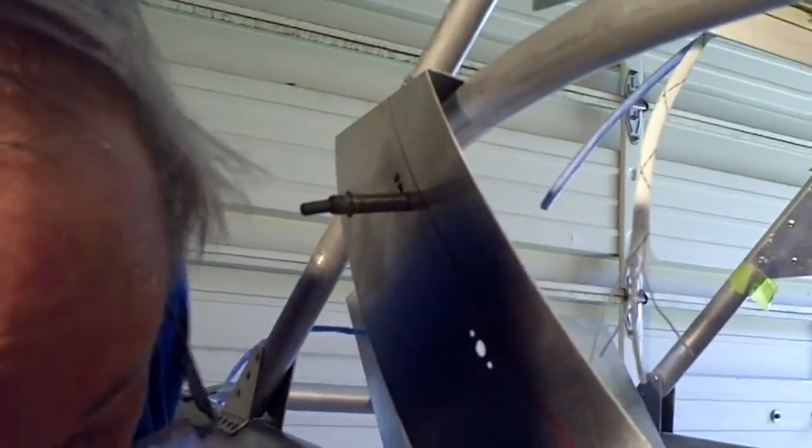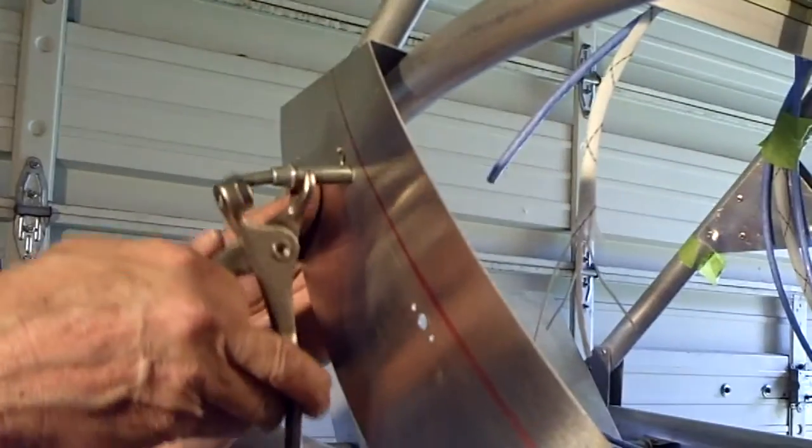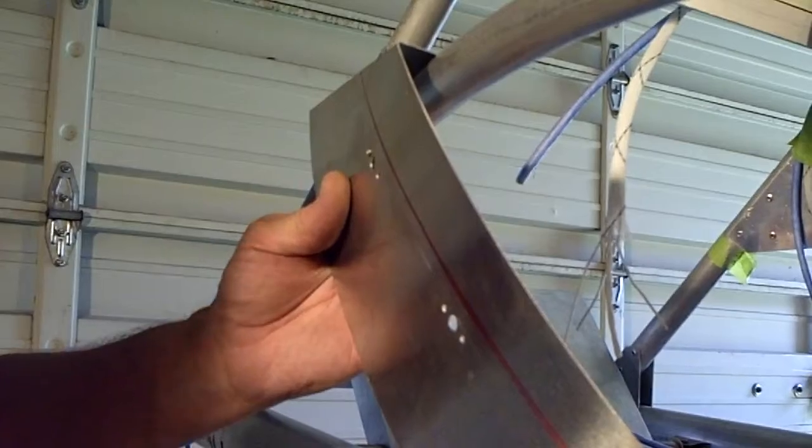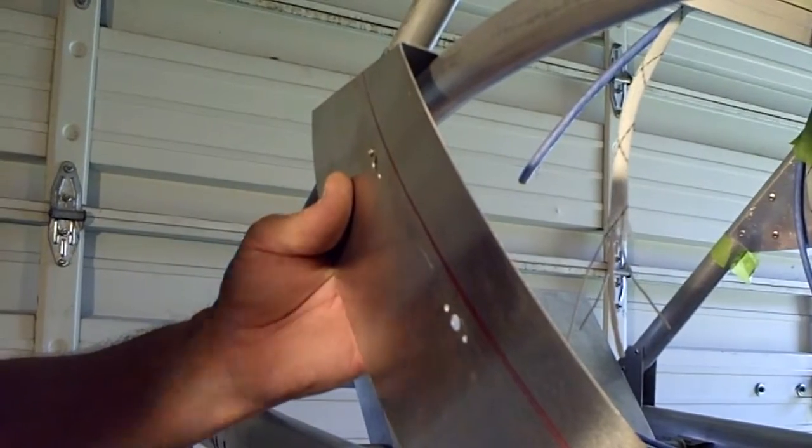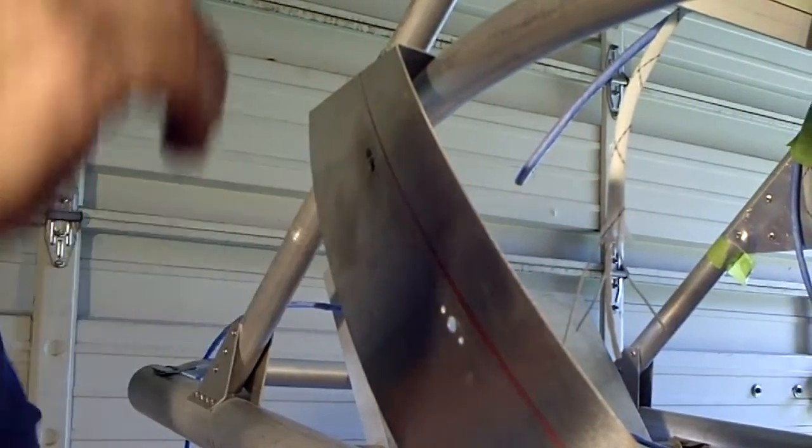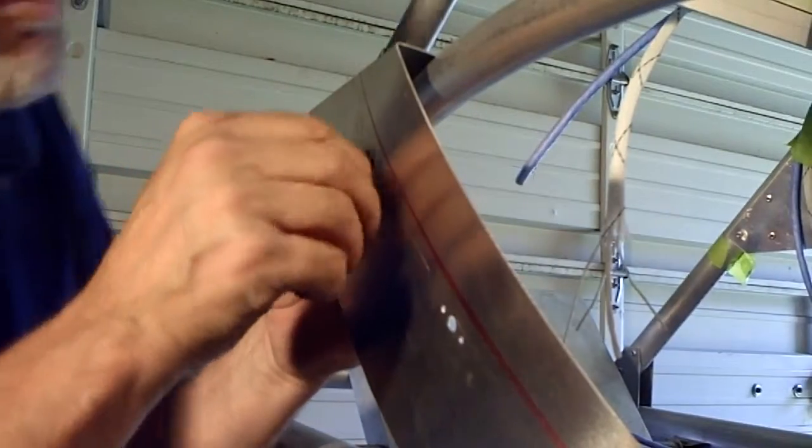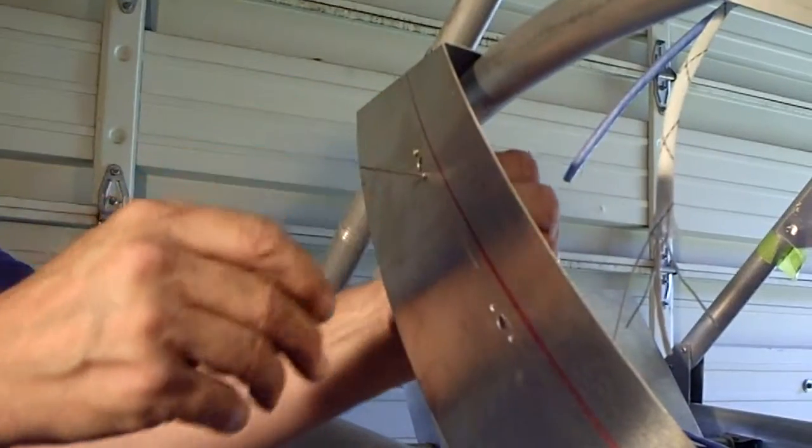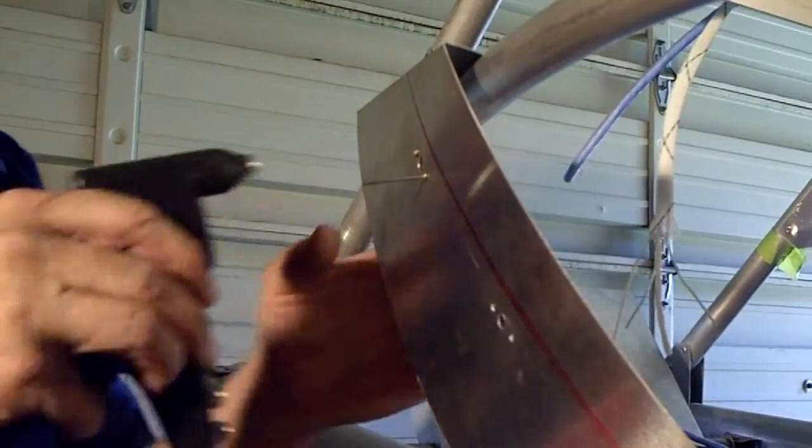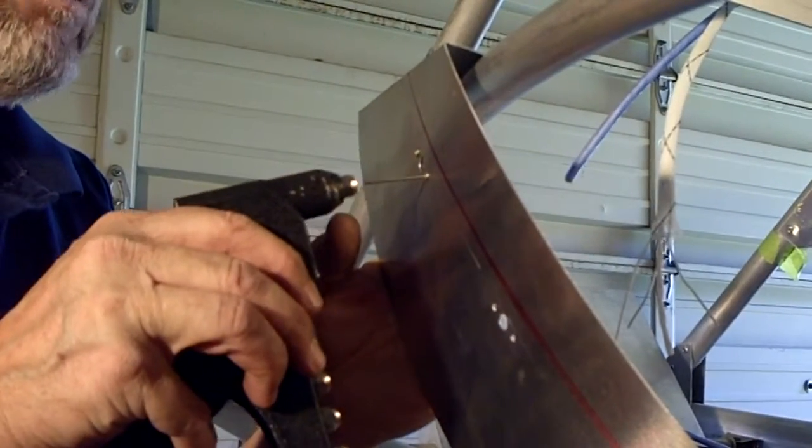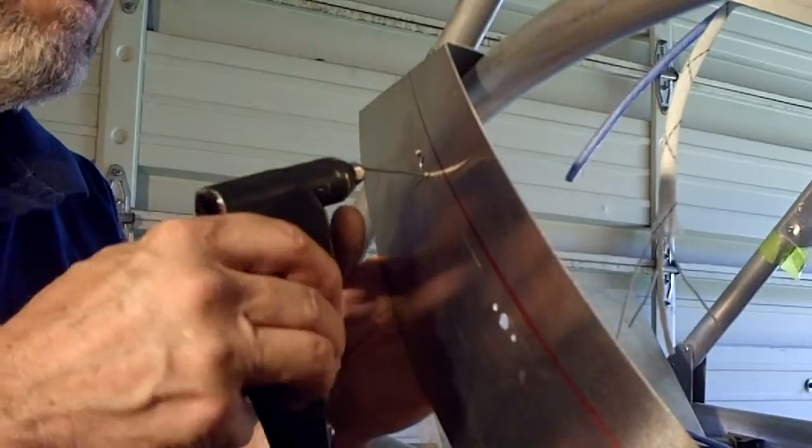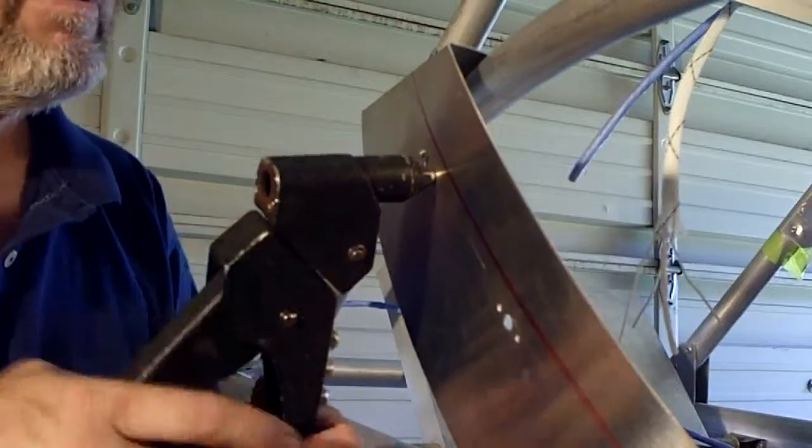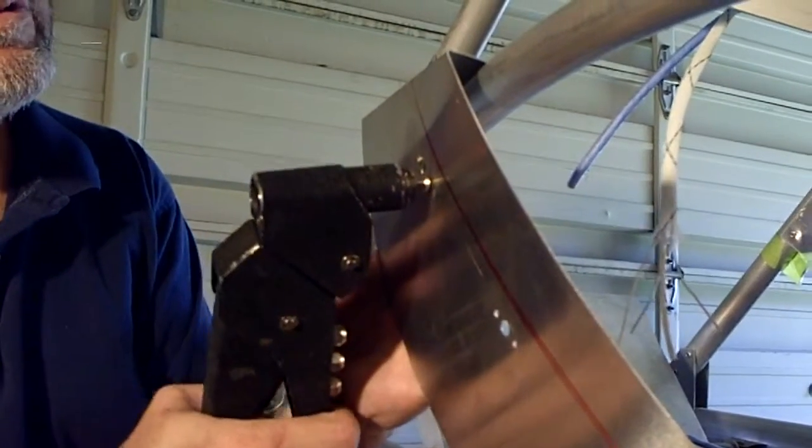Now, we take and pull the Clico back out of here. And we make sure that that hole is lined up on the other side. Take a good look at it and visually confirm that you're getting the rivet through the nut plate hole. Nothing like pulling a rivet only to find out that you didn't get it through the hole on the nut plate. That'll make your day.